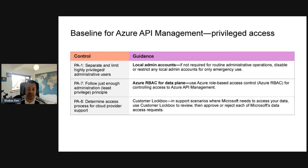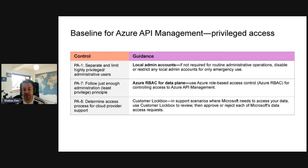For privileged access, the baselines are PA1, PA7, and PA8. PA1 is around separating and limiting highly privileged admin users — for example, if local admins aren't required for routine administrative operations, disable them. PA7 is to follow the just-enough administration / least-privilege access principle using Azure RBAC for the data plane. PA8 is to determine access across the cloud provider — Customer Lockbox is a good example.